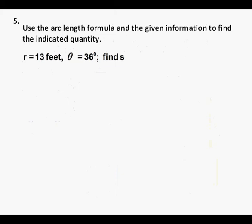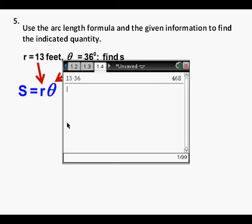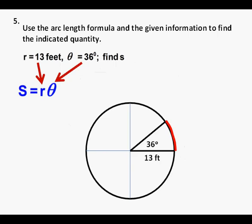Problem 5. Use the arc length formula and the given information to find the indicated quantity. Here we're given everything we need except the arc length formula, and that formula is s equals r times theta. S is the arc length, r is the radius, and theta is the angle in radians. If we replace r with the radius of 13 feet and theta with 36 degrees, that's all we need. We'll multiply the radius of 13 by theta 36, and we get 468, which some students gave as an answer.